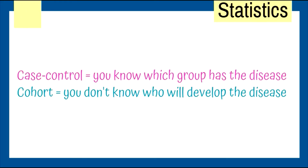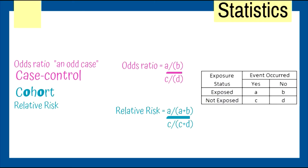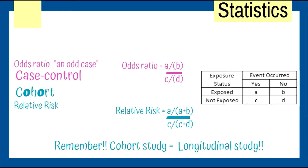In case-control studies, the main measure of association is the odds ratio. Relative risk is for cohort. Remember: relative risk has two R's and cohort has two O's. Both O's are empty — reminding us that both groups' outcomes are unknown at the beginning of the study. What we know is exposure versus non-exposure, then we see who develops the disease.